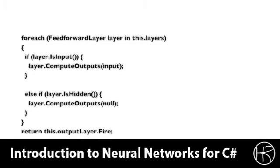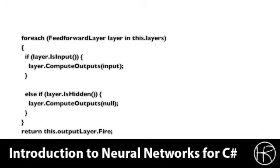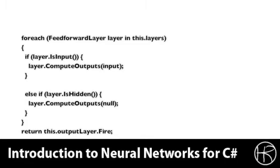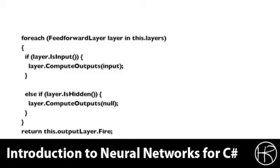Looking inside of the compute outputs method, we can see what it's actually doing. We can see that it's going to loop over all of the feedforward layers that were provided to this neural network. For each layer, it needs to see how it's going to handle it. It's going to handle the input layers differently than the hidden layers. And then finally, it's going to return the output layers.